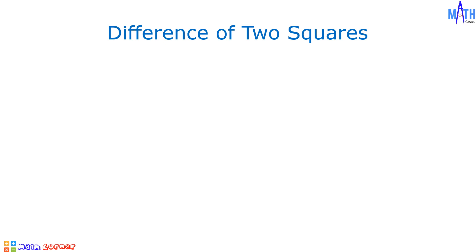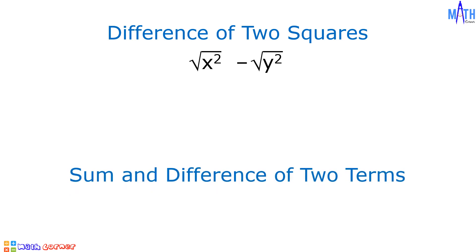In factoring the difference of two squares, let's say x squared minus y squared, we will extract the root of the first term and the second term, and we will write the answer as the sum and difference of two terms.